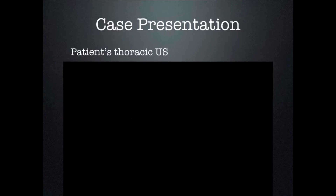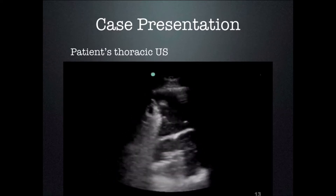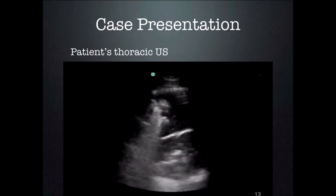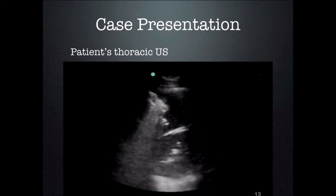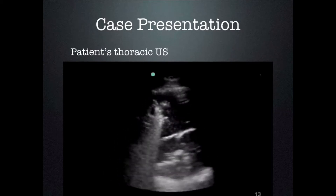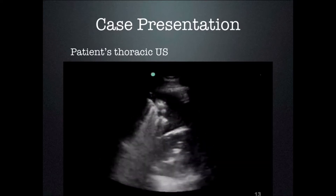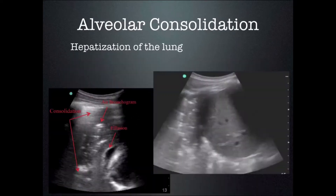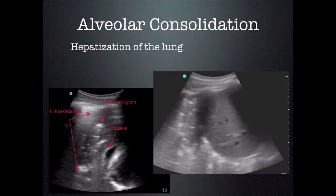In every other image we've seen so far we don't really see anything that is lung, because the lungs are filled with air and we cannot image air. In this case we see something — this is lung filled with pus. We can see a consolidation or infiltration of pus into the lungs, and the bright areas causing the reverberation artifact are really air in the bronchioles — that is an air bronchogram.